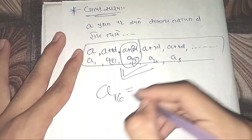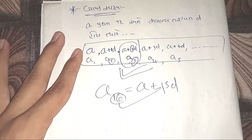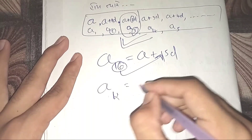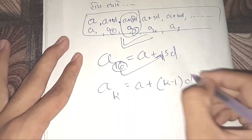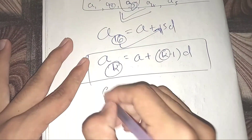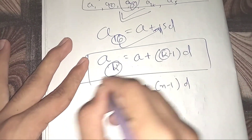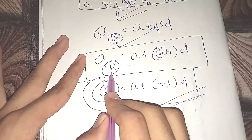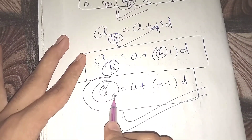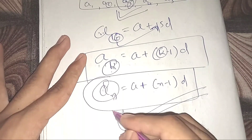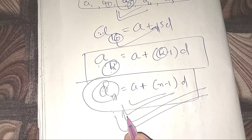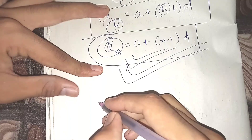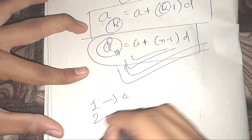જો આપણને 16મું પદ પૂછવામાં આવે, તો: a + 15d. જો d = −1 હોય, તો a + (−1)d. આ n-મું પદ (aₙ) = a + (n−1)d — આ સૂત્ર મહત્ત્વનું છે.